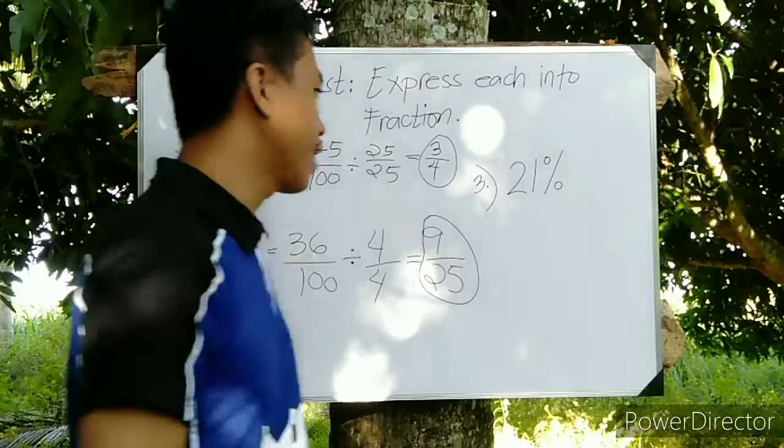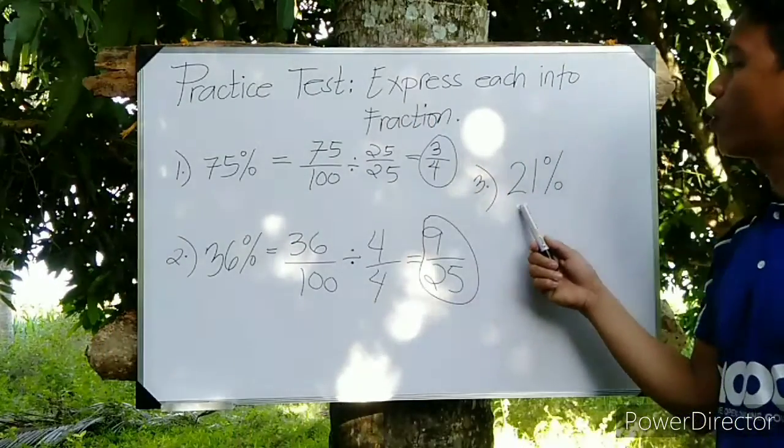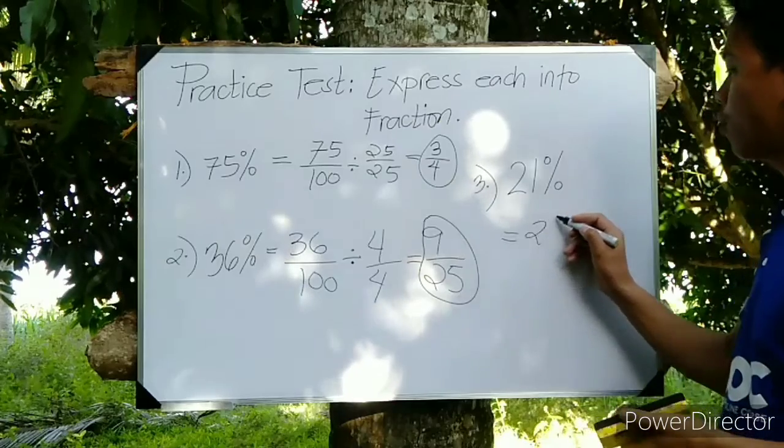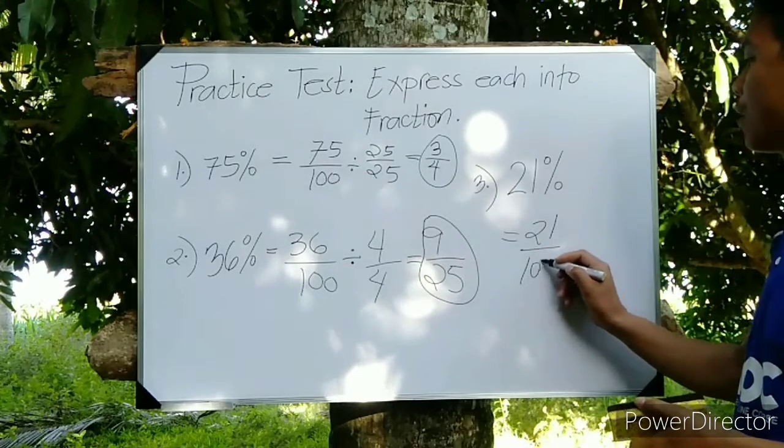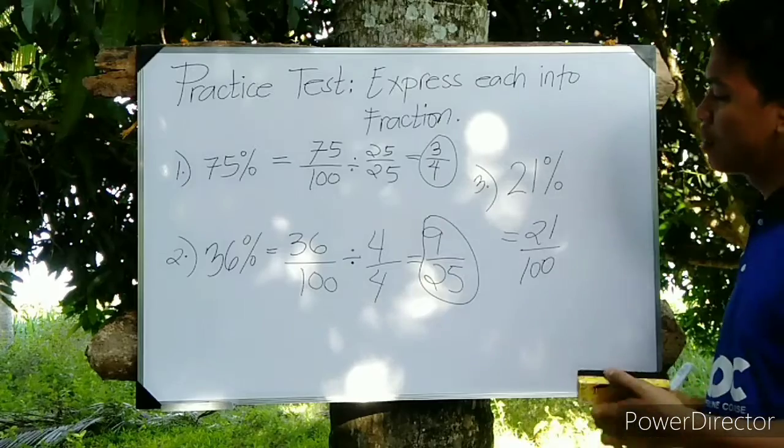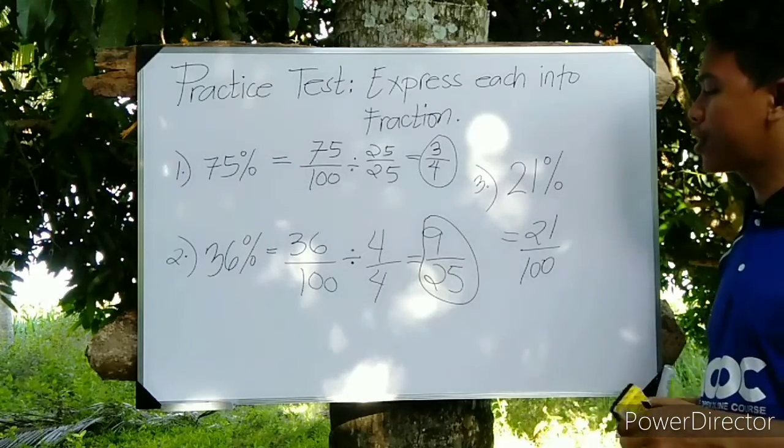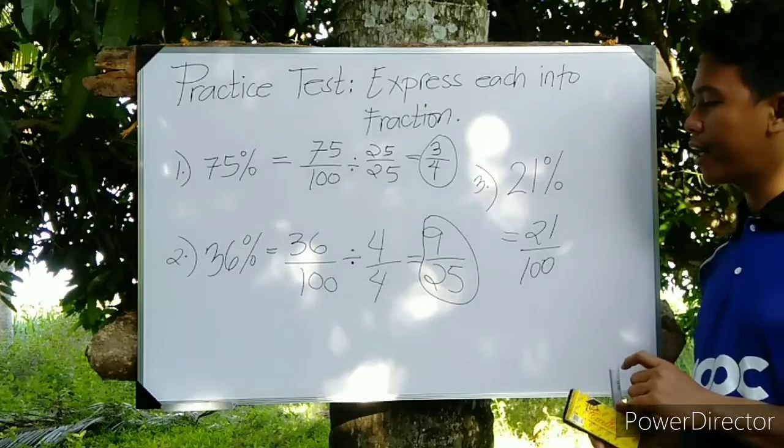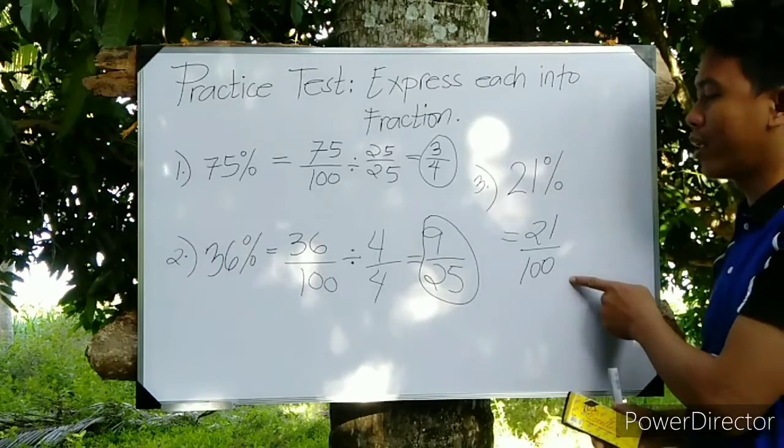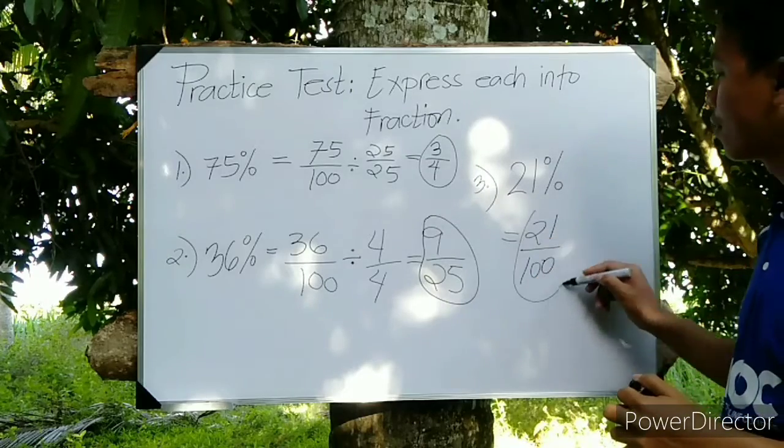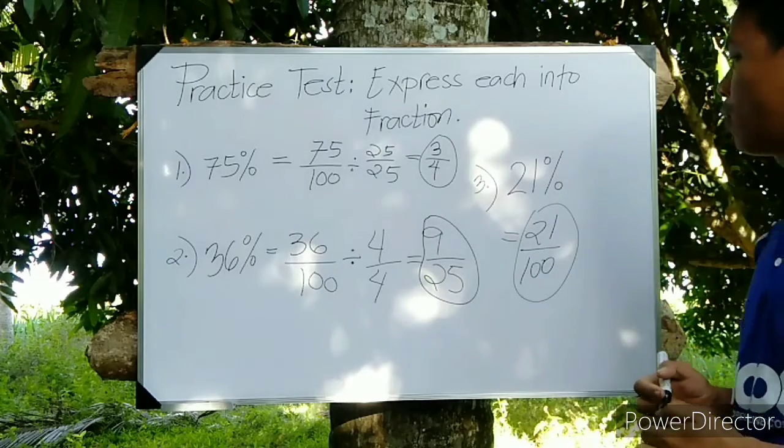For the last number, we have 21%, so that means we have 21 over 100. The fraction cannot be reduced into lowest term anymore because we have 21 over 100. Therefore, our answer is 21 over 100.